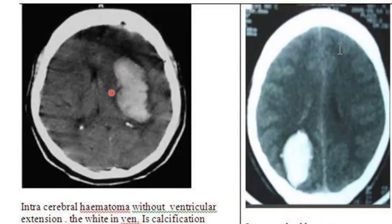To differentiate hemorrhage from calcification: hemorrhage always has mass effect, while calcification does not. Here you can see choroid plexus calcification for comparison. Calcification has a greater density than blood. On the next image you can appreciate an intraparenchymal hematoma in the posterior aspect of the parietal lobe.